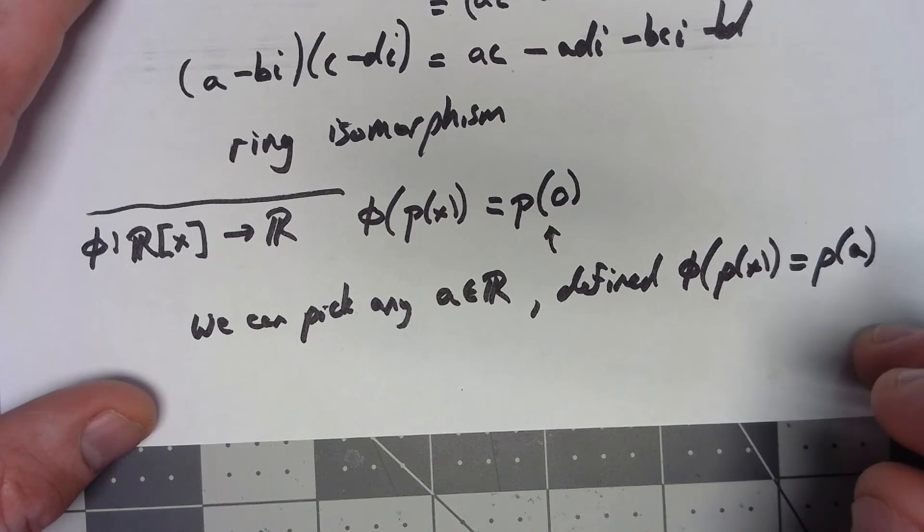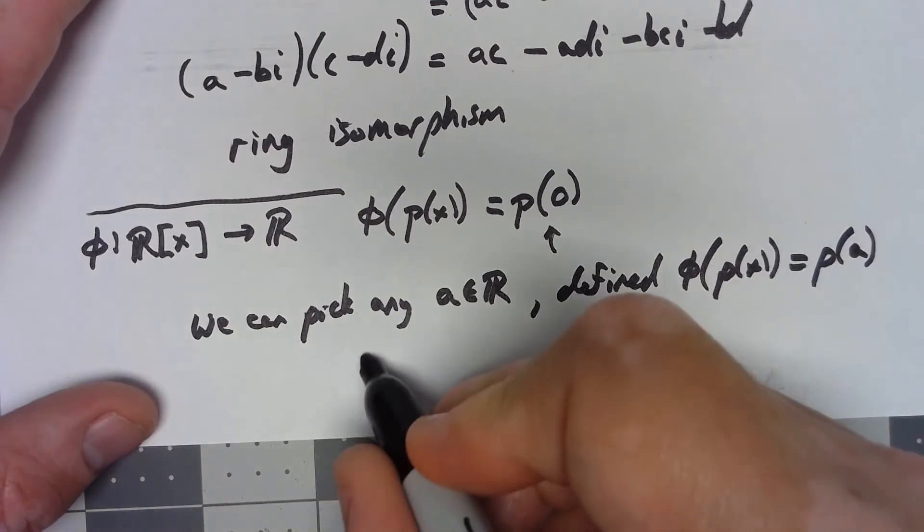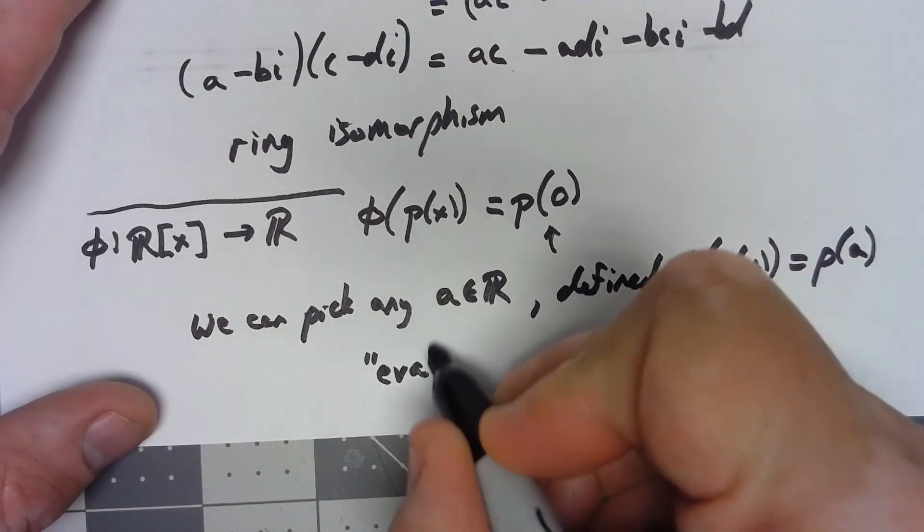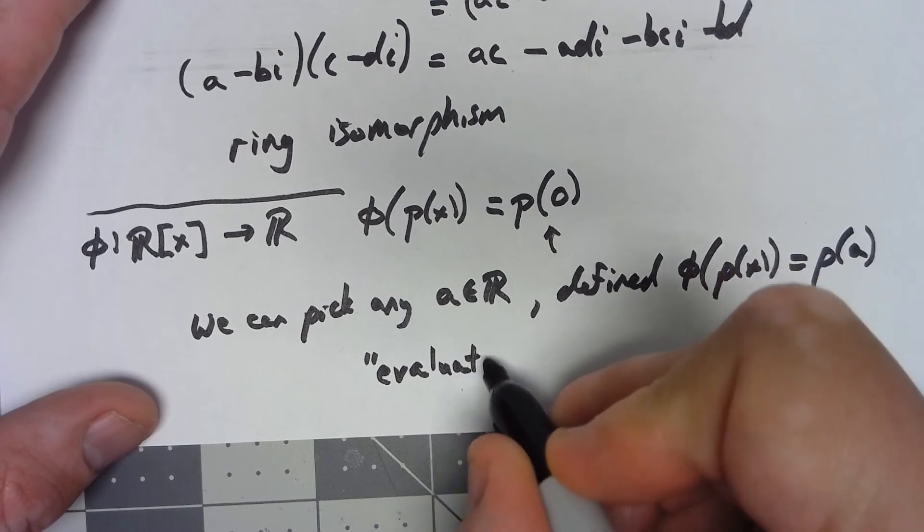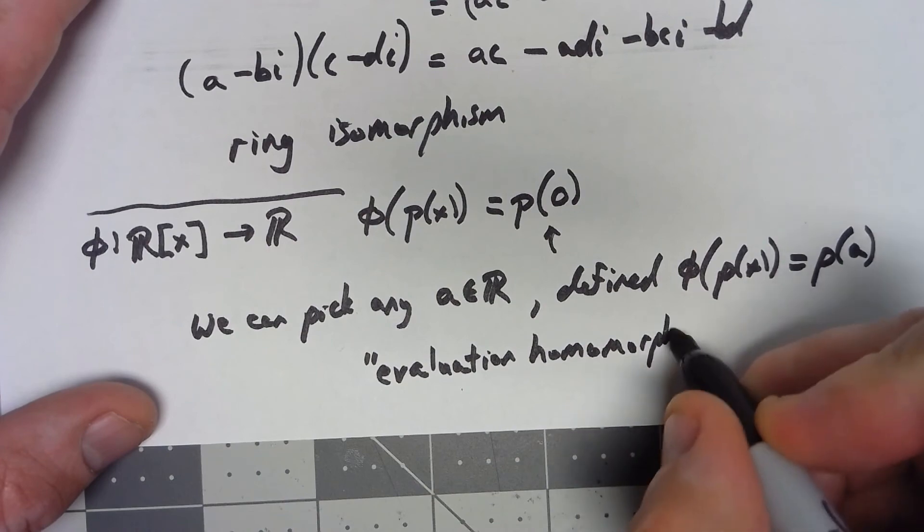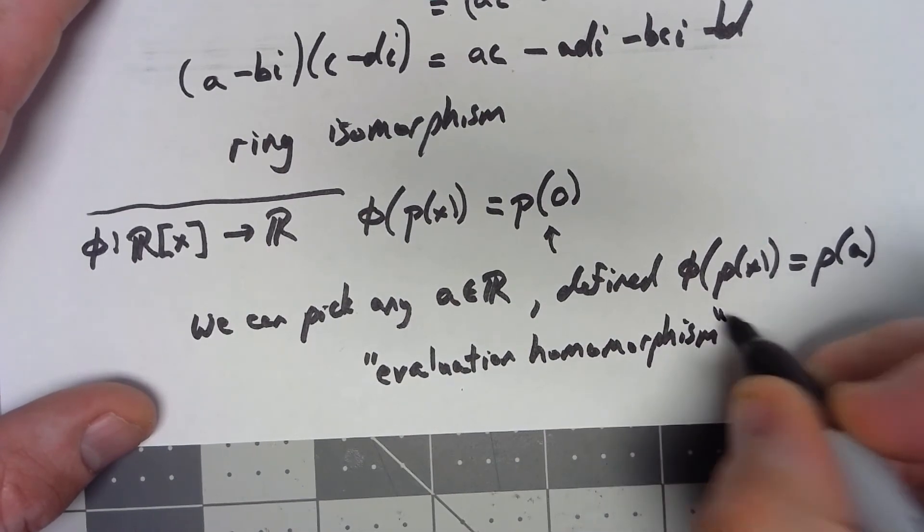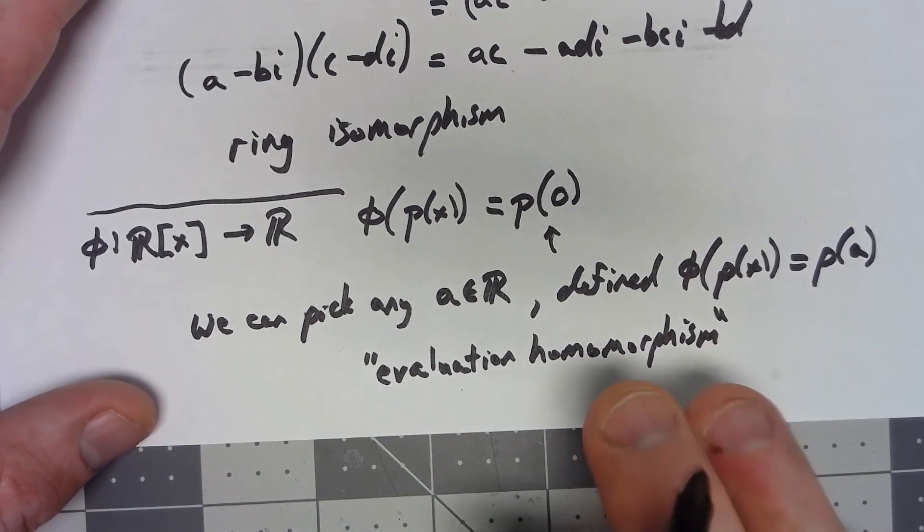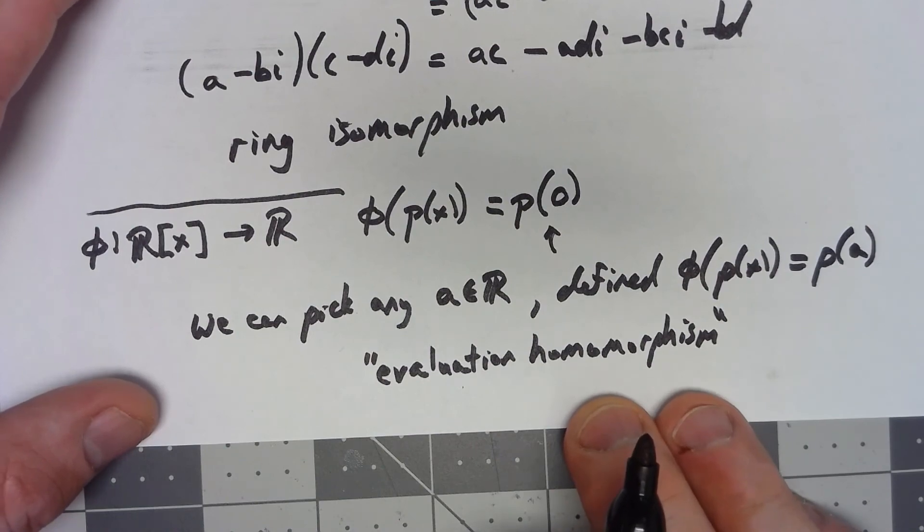It's actually called the evaluation homomorphism and this is going to be a really useful homomorphism here in just a little bit.